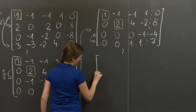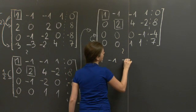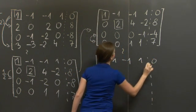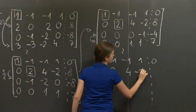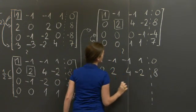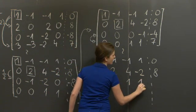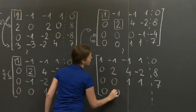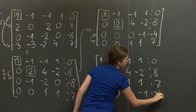And let's get the next matrix, which is 1, -1, -1, 1, 0. 0, 2, 4, -2, 8. Then we put the fourth row here: 0, 0, 1, 1, 7. And we put the third row here: 0, 0, 0, -1, -4.